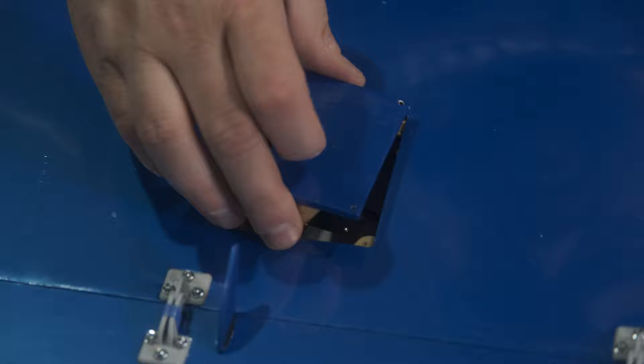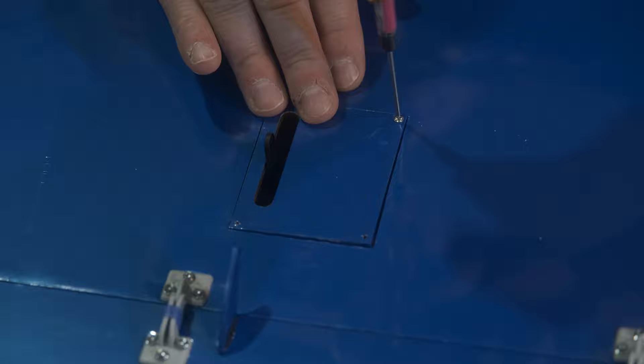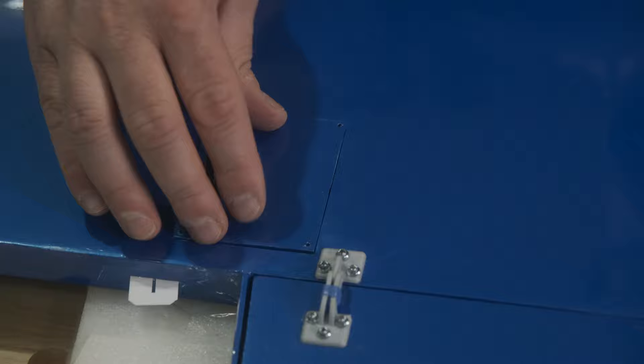Mounting the flap servo pocket is pretty much the same thing. We're going to be using those button head screws again - drill the pilot holes, establish the threads, pull out the screws, use some CA, and we got these in here just fine.